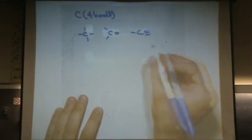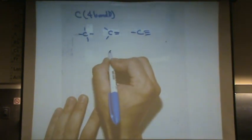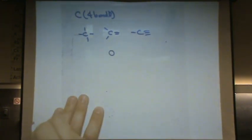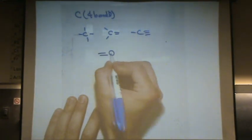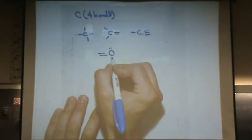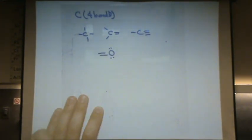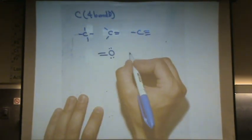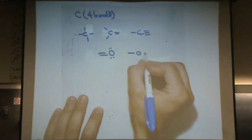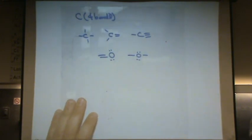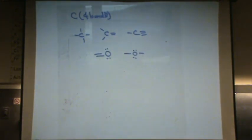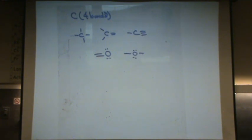For oxygen, it will most commonly look like this or this. Notice oxygen always has two bonds and two pairs of electrons.